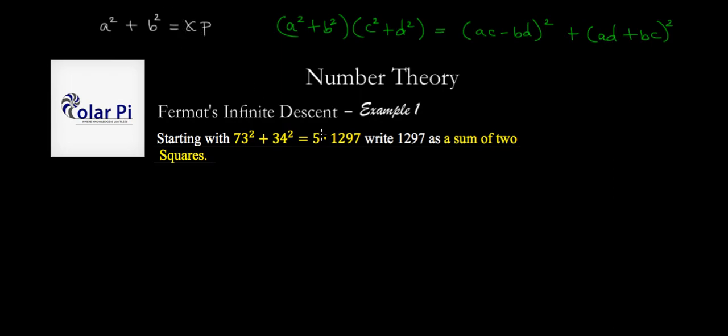...into a 1, that is turn this 5 into a 1. And when we've succeeded in that, in turning the 5 into a 1, then we will have succeeded in writing 1297 as a sum of squares on the left hand side. That is, when we turn the 5 into a 1 on the left hand side, whatever we have will be a sum of two squares and it will equal 1297.